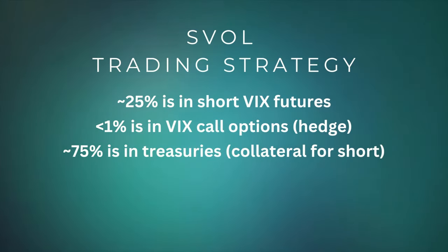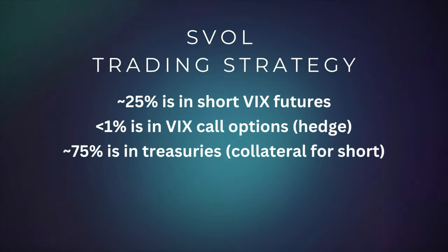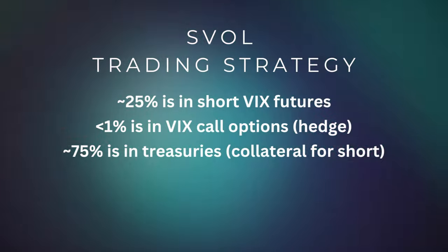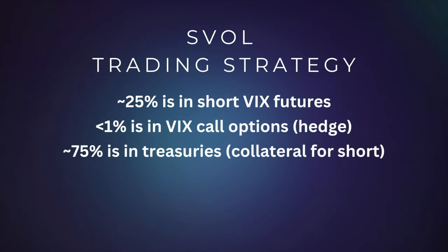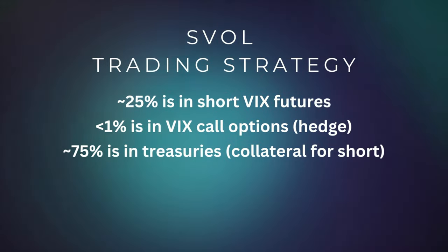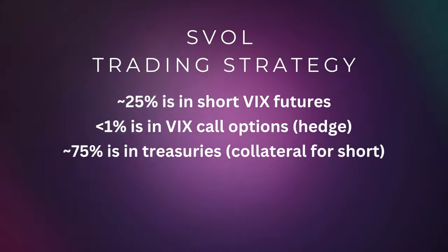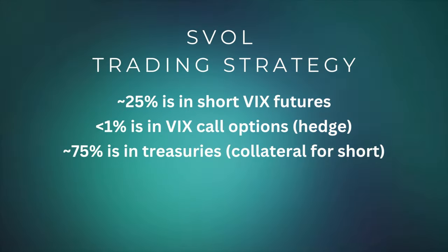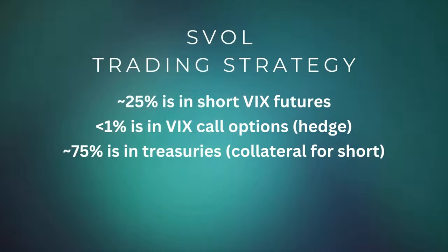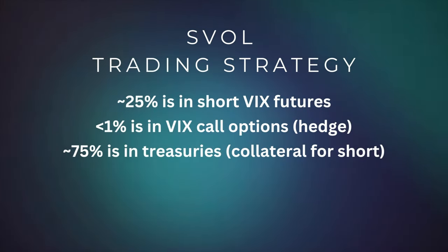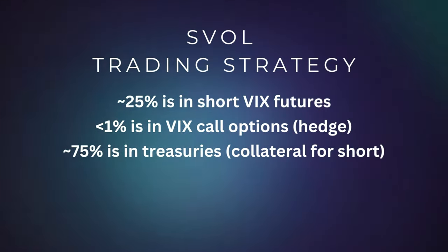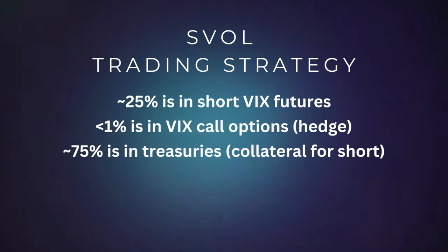The reason they are hedging their portfolio is because you never know what could happen with the VIX. During COVID, for example, you had a massive spike in the VIX. If you don't have any hedging on your short positions, you could have just been wiped out. The remaining 75% is used to invest in treasuries. Most derivative trading ETFs use treasuries for collateral.